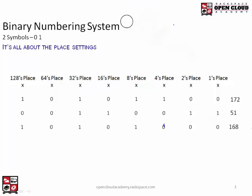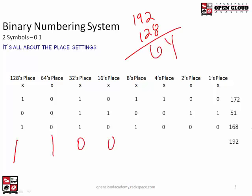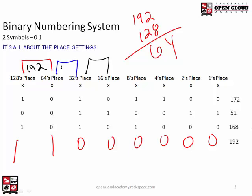Let's do 192. This one is easy because we discussed it earlier — 128 plus 64 is 192. So we do 192 minus 128, which is 64, and that's it. Remember the shortcut: if you add 128 and 64 together, it's 192. If you add 64 and 32 together, it's 96. And if you add 32 and 16 together, it's 48. It's important to remember those combinations.